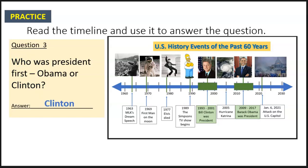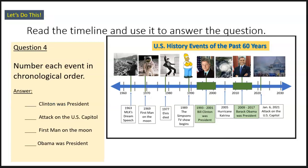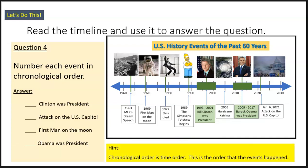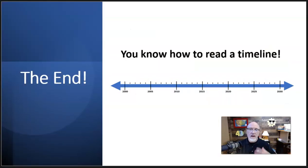Let's try one more question — putting events in chronological order, which means time order. Looking at four events: the earliest is the first man on the moon, so we mark that number one. Next is Bill Clinton becoming president, then Obama becoming president, and then fourth is the attack on the US Capitol. And there you go — that is how you read a timeline. Now you know how to read a timeline, and we'll move on to some practice.